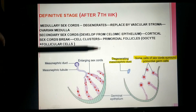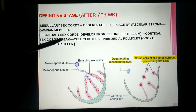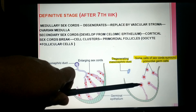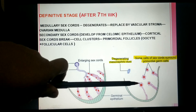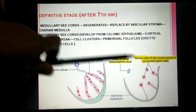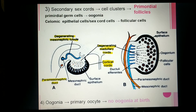To summarize the definitive stage: the medullary sex cords degenerate and are replaced by vascular stroma forming the ovarian medulla. The secondary sex cord cells, formed by proliferation of the coelomic epithelium, break to form cell clusters. In each cluster, the center is occupied by the primary oocyte, and at the periphery follicular cells are arranged. These cell clusters are called primordial follicles, and thus the cortex of the ovary is formed.